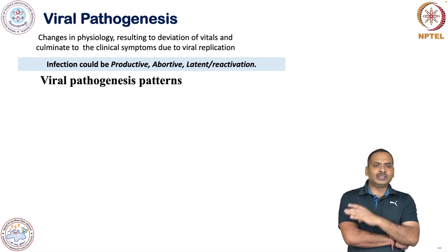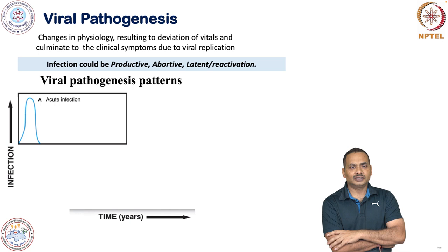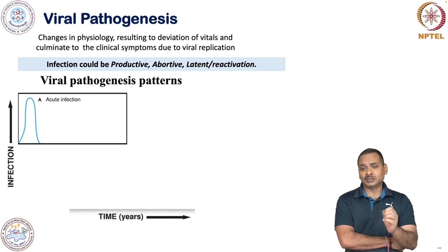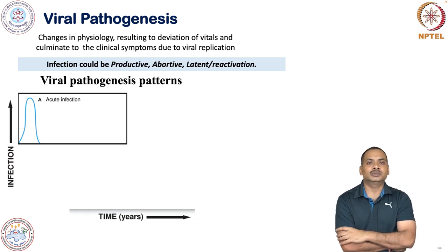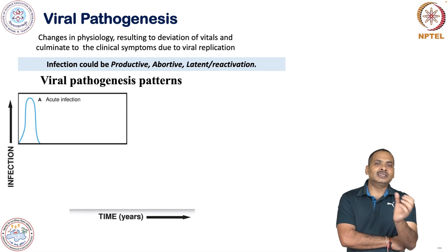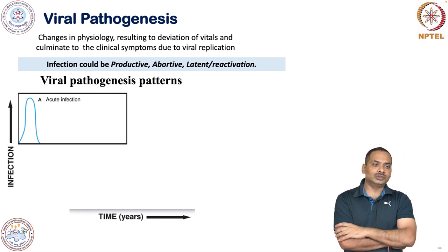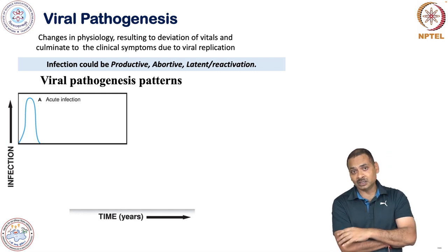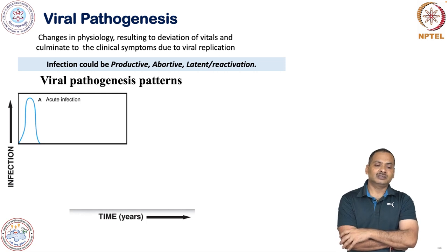Viral pathogenesis patterns: there are several kinds. There is acute infection, where the virus infects the host cell and replicates in very high numbers, immediately affecting the vitals of the host, sometimes very severely. That may cause fatality. We call it acute infection.